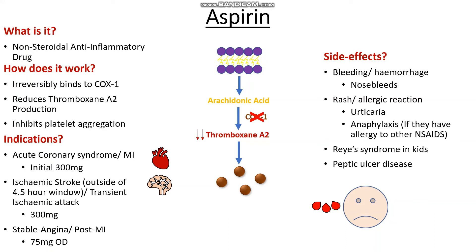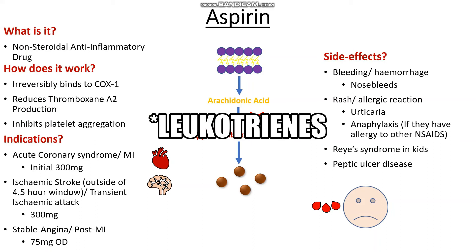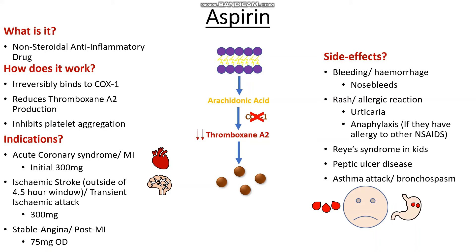Finally, in very rare cases, if our arachidonic acid is not being converted into thromboxane A2 because we are blocking the COX enzyme, the arachidonic acid may go down a separate pathway and be formed into pro-inflammatory molecules like lipoxins, which may actually cause things such as acute asthma or bronchospasms. So that's aspirin — a fairly straightforward drug but with a lot of side effects to be aware of.